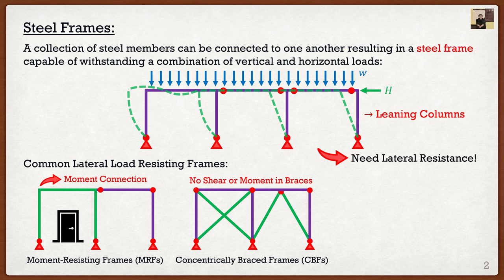It gets a little more complex when we talk about seismic design, because we would actually allow these members to start yielding in tension or buckling in compression. Comparing this system to a moment resisting frame, the stiffness increases a lot. Under lateral loads a moment resisting frame might deflect around 50 millimeters, while concentrically braced frames might only deflect around 1 millimeter. These concentrically braced frames are also typically cheaper than moment resisting frames, making them a more economical solution. The problem is these braces take up the entire bay, so we can't really put a window or a door in.